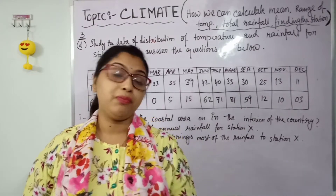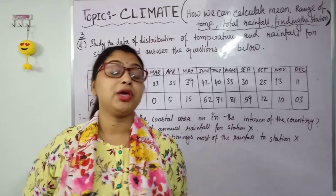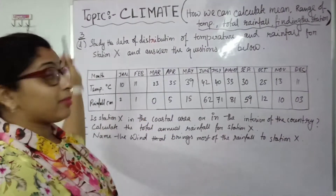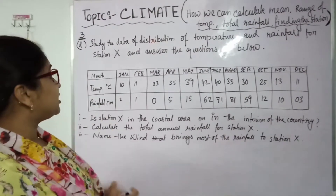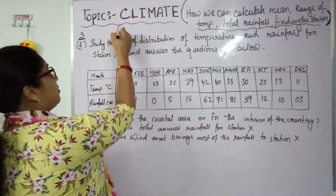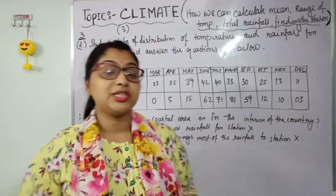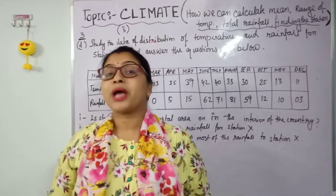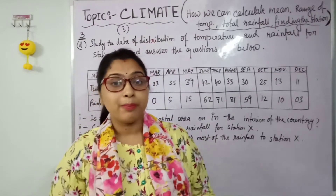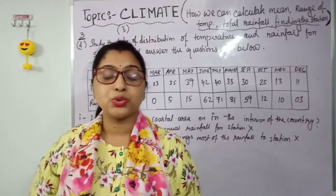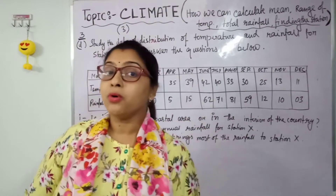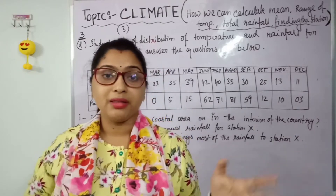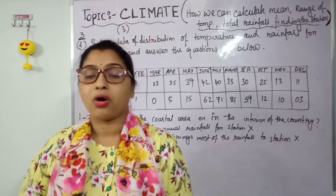One question which is 90% likely to come in your climate chapter — that is question number 3. This question will have 3 marks, and it is just a calculation part. If you don't know how to calculate, these 3 marks will not be added to your total marks. But if you know how to calculate, you can easily score without writing many sentences or explanations.